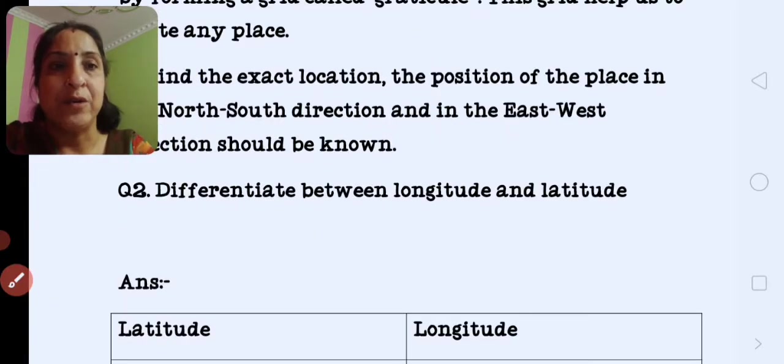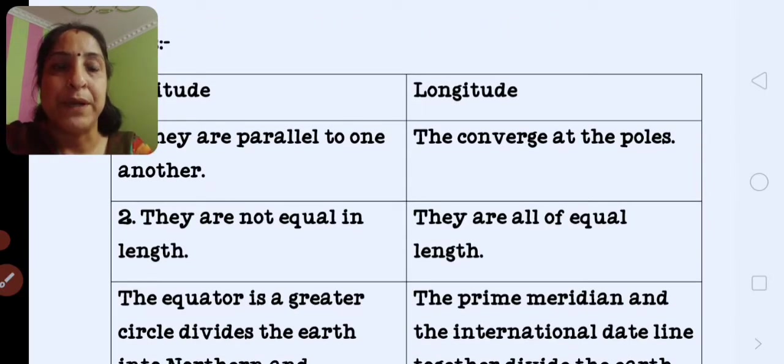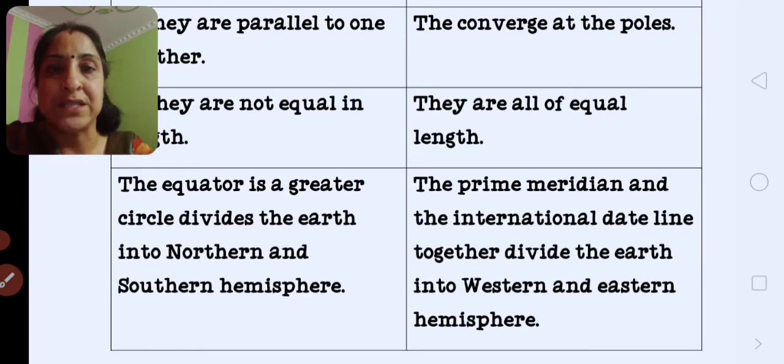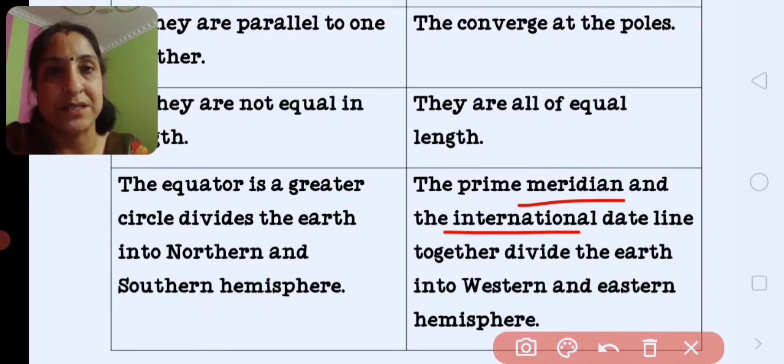Next, differentiate between longitude and latitude. The latitude, they are parallel to one another. And longitude, they converge at the poles. They are not equal in length, but the longitudes are equal in length. The equator is the great circle, divides the earth into north and southern hemisphere. And the prime meridian is the international dateline, together divide the earth into western and eastern hemisphere.